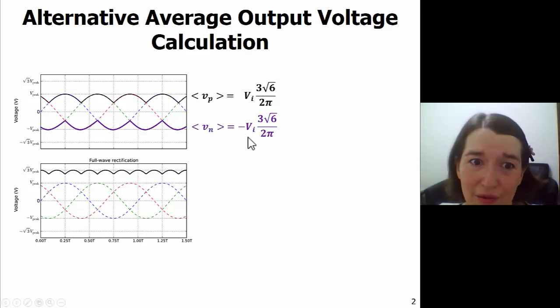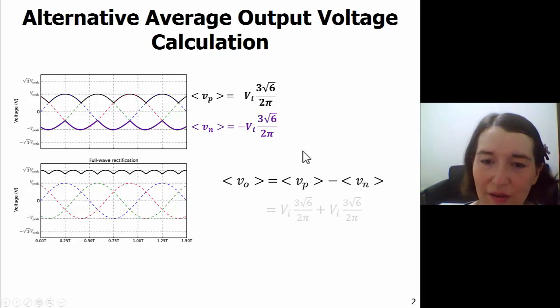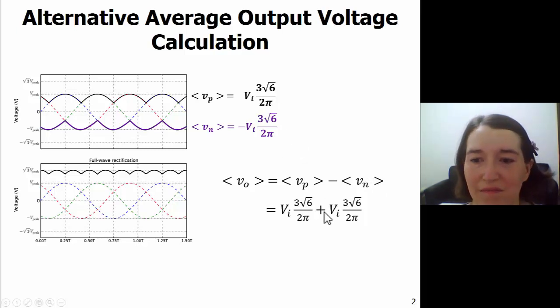For full-wave rectification, you can think about it as the positive voltage average minus the negative average, so this equation is shown here. You just plug in these values, but then together the negatives will end up being a positive, and you just add them together and you'll end up with the same exact equation.